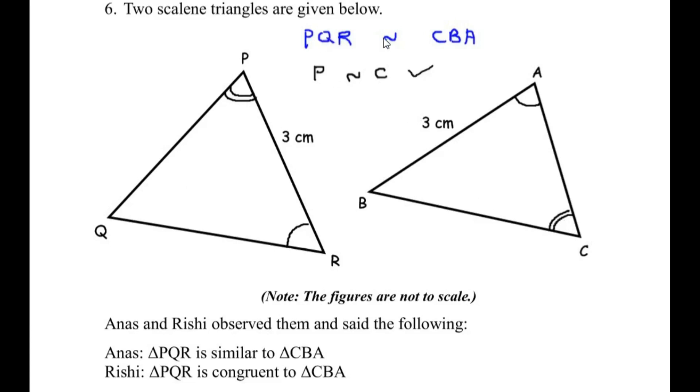Next angle Q is similar to angle B. Let us find out. Angle Q is unmarked. Angle B is unmarked. So yes these two angles are similar. Finally the last angle that is angle R is similar to angle A. Now you can see angle R is marked once and angle A is marked once which means these two angles are similar. So by angle angle criterion we can say that the two triangles are similar. Now we can say that Anas is correct. The triangles are similar.